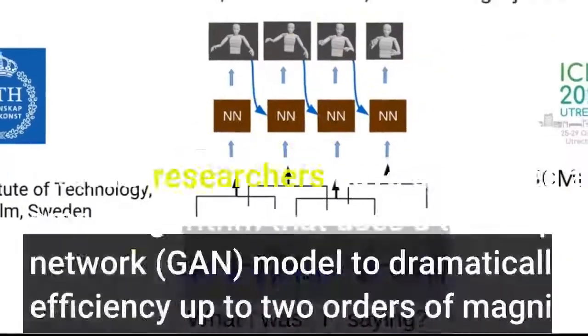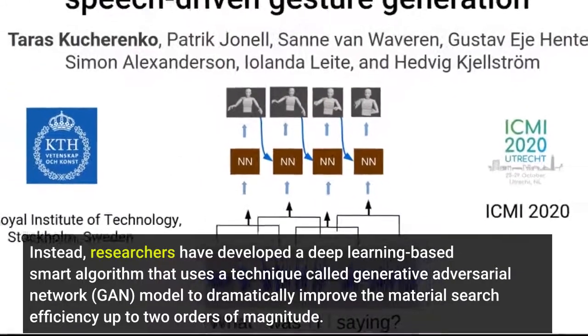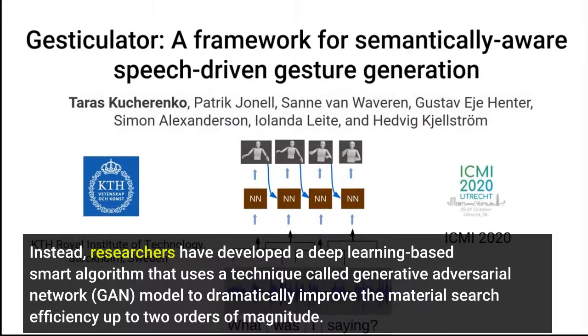Instead, researchers have developed a deep-learning-based smart algorithm that uses a technique called Generative Adversarial Network model to dramatically improve the material search efficiency up to two orders of magnitude. It has the potential to greatly speed up the discovery of novel functional materials.